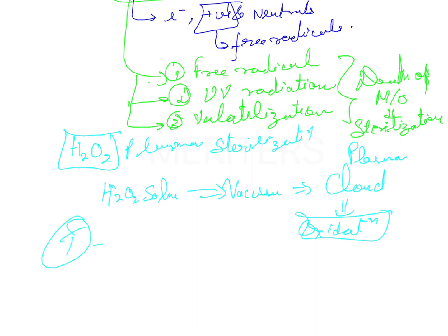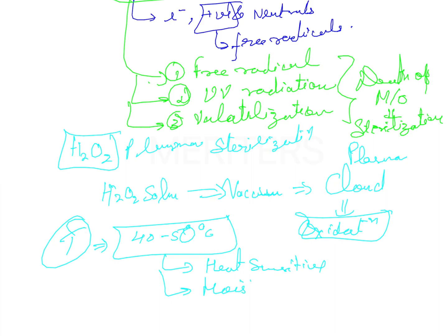What is the temperature range of plasma sterilization? It is between 40 to 50 degrees Celsius. It is particularly well suited for use with heat-sensitive as well as moisture-sensitive medical devices. Since the temperature is only 40 to 50 degrees Celsius, you can safely use heat-sensitive and moisture-sensitive instruments in this process.